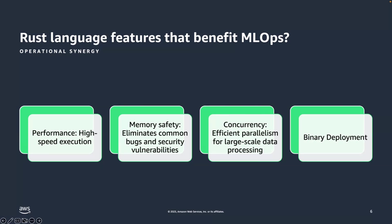In terms of concurrency, the concurrency model is actually designed for parallelism and multi-threaded performance. These features make it a great choice for high-performance computing, which is what ML Ops is all about. And binary deployment is a huge feature, which allows you to build once and deploy many.